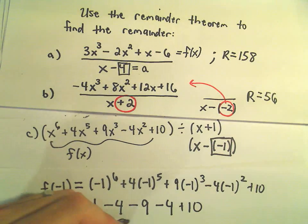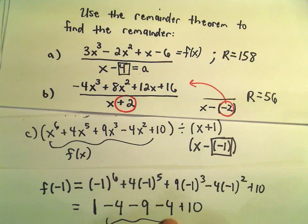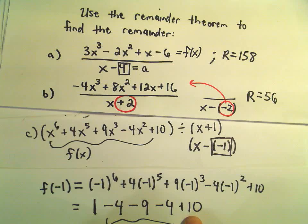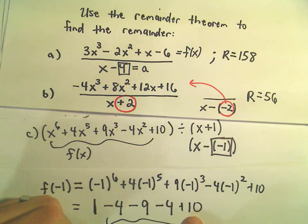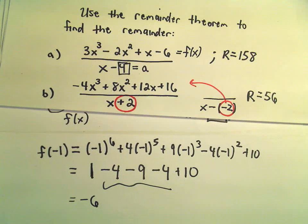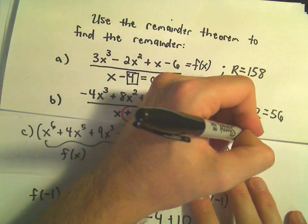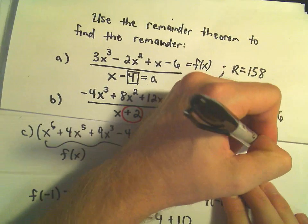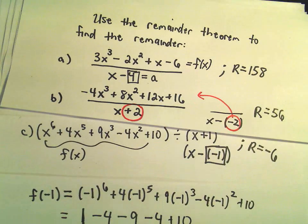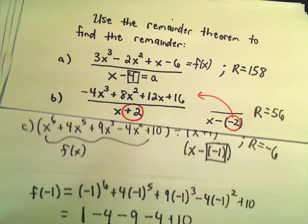Negative 4 and -4 is -8. -9 is -17 plus 10 would be -7 plus another 1. I'm getting -6 here if all my arithmetic is correct. So in this very last example, if we do our long division, we'll simply get a remainder of -6 after we do the arithmetic.